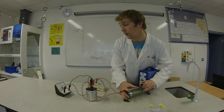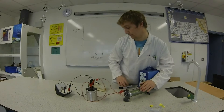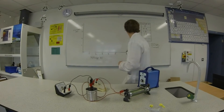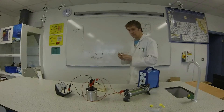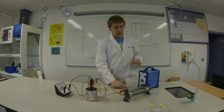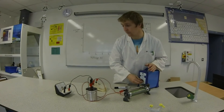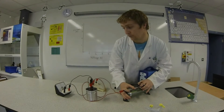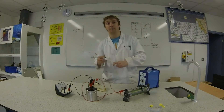Now we'll find four volts across the resistor and we have 2.4 amps. And we'll just take one more value — we'll get five volts across the resistor and we have 2.8 amps.